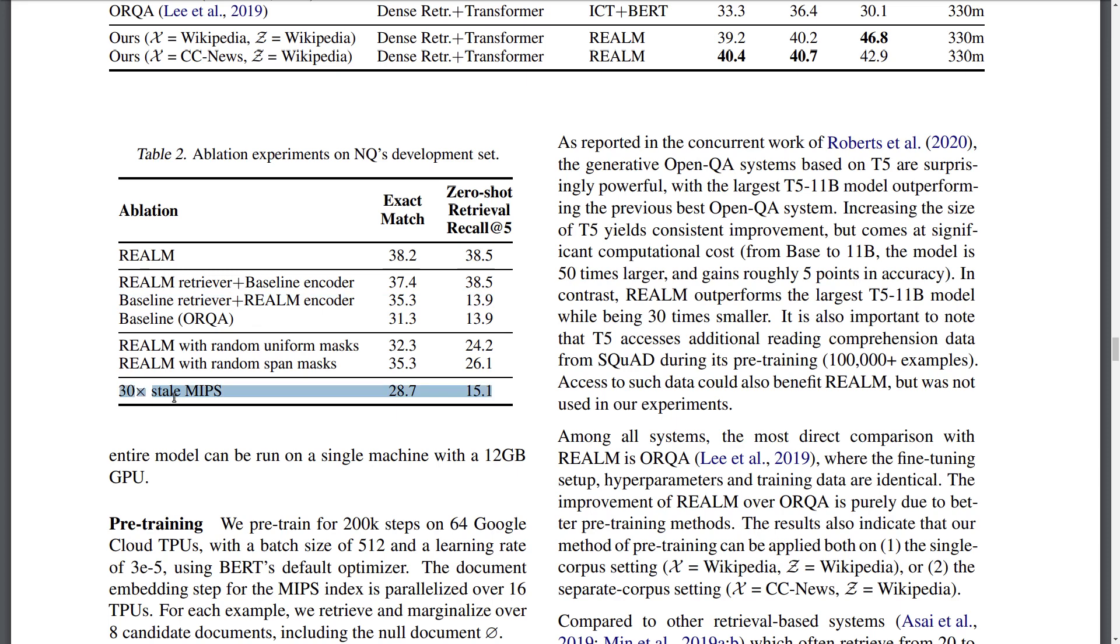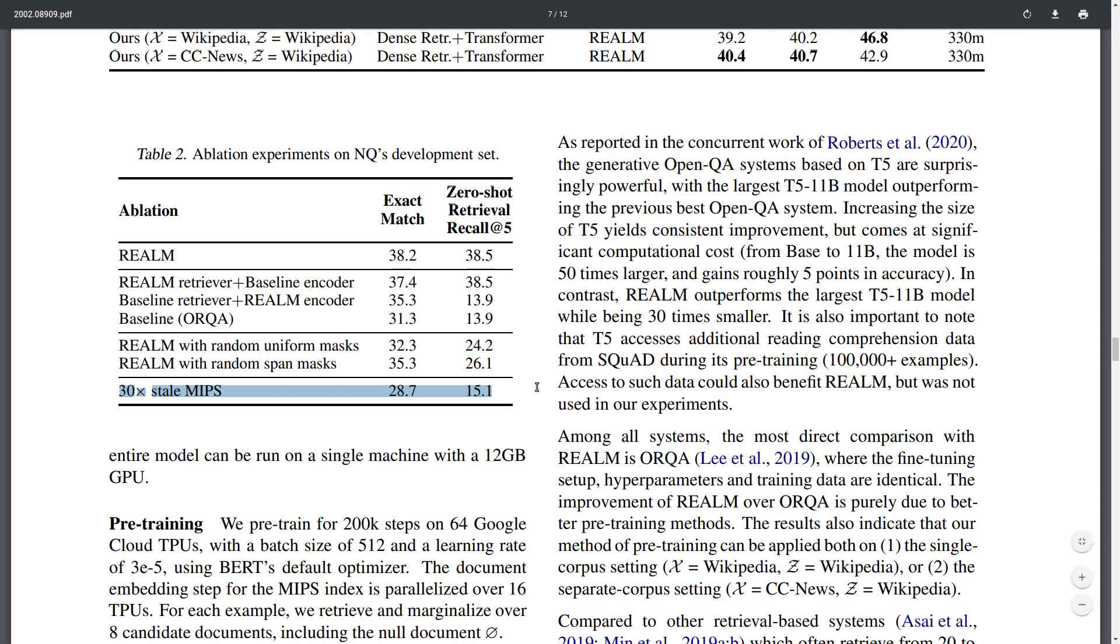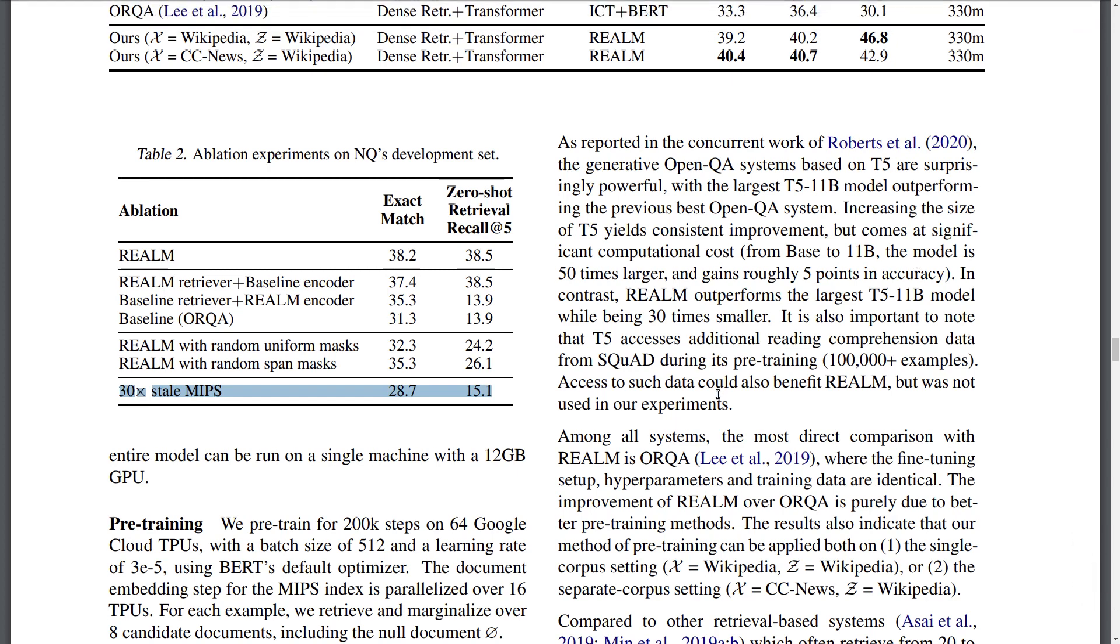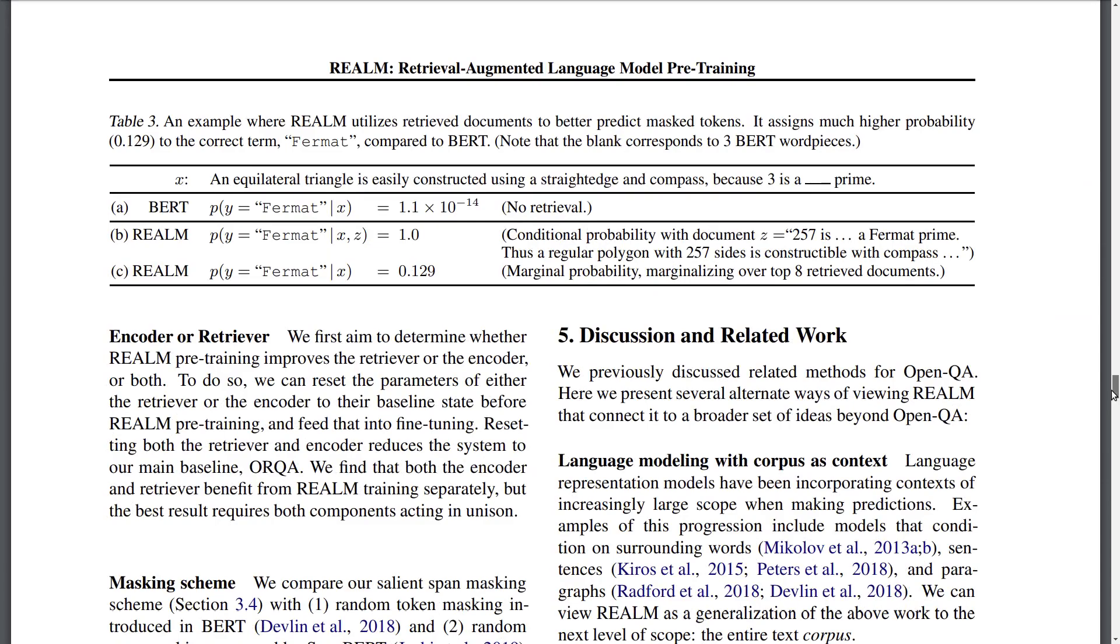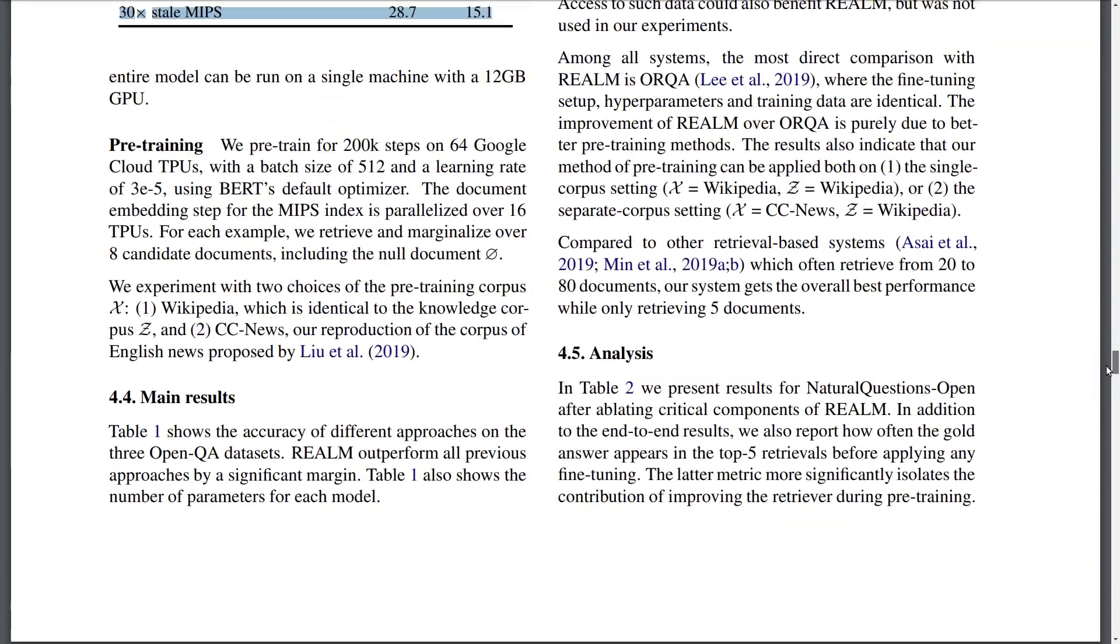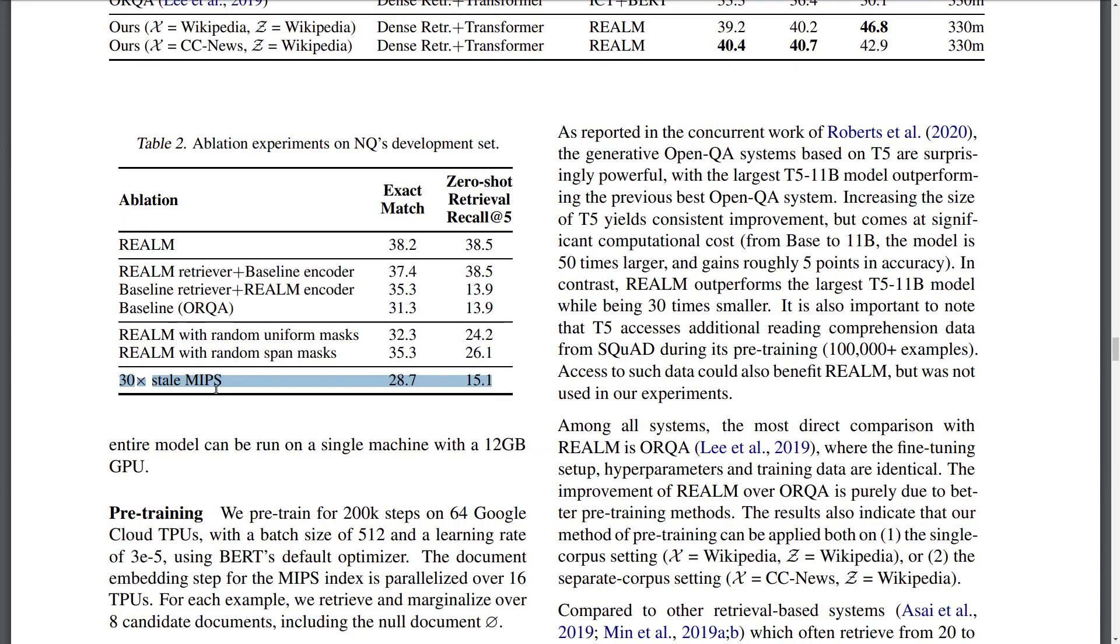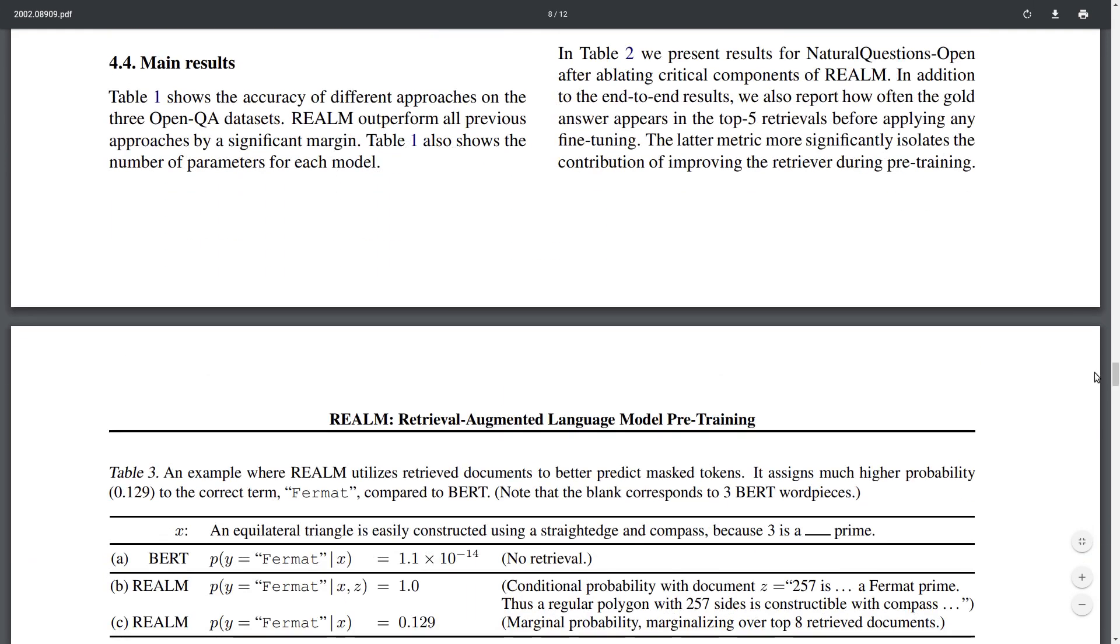And also it seems that if you update the approximate nearest neighbor index for retrieving the similar documents—if you update it less frequently, you are getting worse performance. So it's important to keep updating this index regularly because the parameters of the embeddings are going to be changing as you keep on fine-tuning. And actually it's very interesting, I didn't see any results here. They didn't do any analysis, I mean—I'm curious about the properties of these final document embeddings that they were able to learn with this retrieval model.